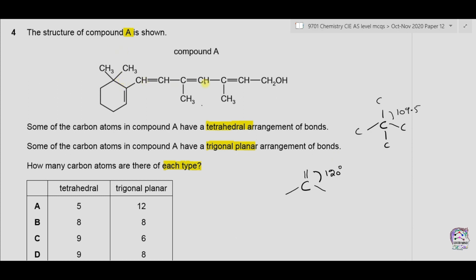Let's find out which carbons are making four single covalent bonds. We have a CH3 group where the carbon is bonded to three hydrogen atoms and one carbon. A second CH3 is also making four bonds. Another carbon makes four single bonds — two to CH3 groups and two to the ring. Similarly, a carbon with two hydrogen atoms is also making four bonds, and likewise for the next one.